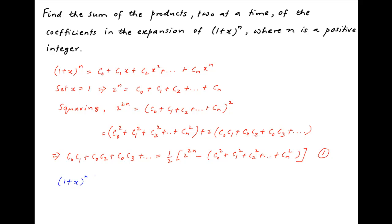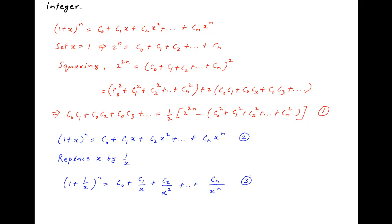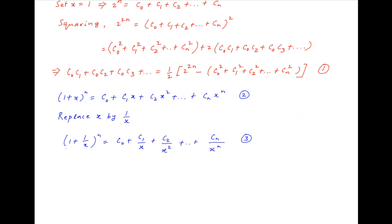Now again, the binomial expansion of (1 + x)^n is C0 + C1·x + C2·x² + ... + Cn·x^n. Call this Result 2. Now replace x with 1/x: we get (1 + 1/x)^n = C0 + C1/x + C2/x² + ... + Cn/x^n. Call this Result 3. Now multiply Result 2 with Result 3.